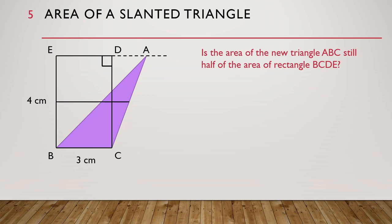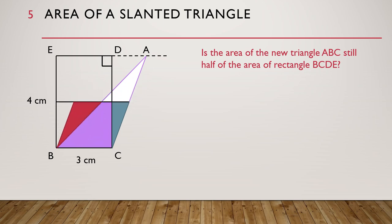First, draw a line through the middle of rectangle BCDE like this. This splits the rectangle BCDE into two equal parts. Then we divide this part of triangle ABC into two smaller triangles. Now let's watch the animation to see what happens to these two smaller triangles. We have moved the two smaller triangles to fit in the lower half of rectangle BCDE.